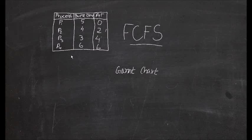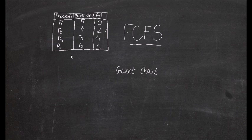Hello everyone. Today we're going to be starting off with the CPU scheduling algorithms. There are basically five CPU scheduling algorithms: First Come First Serve, non-preemptive Shortest Job First, preemptive Shortest Job First, Round Robin, and Priority Scheduling. Today we're going to be looking at the First Come First Serve algorithm, which is basically the easiest algorithm among the CPU scheduling algorithms.